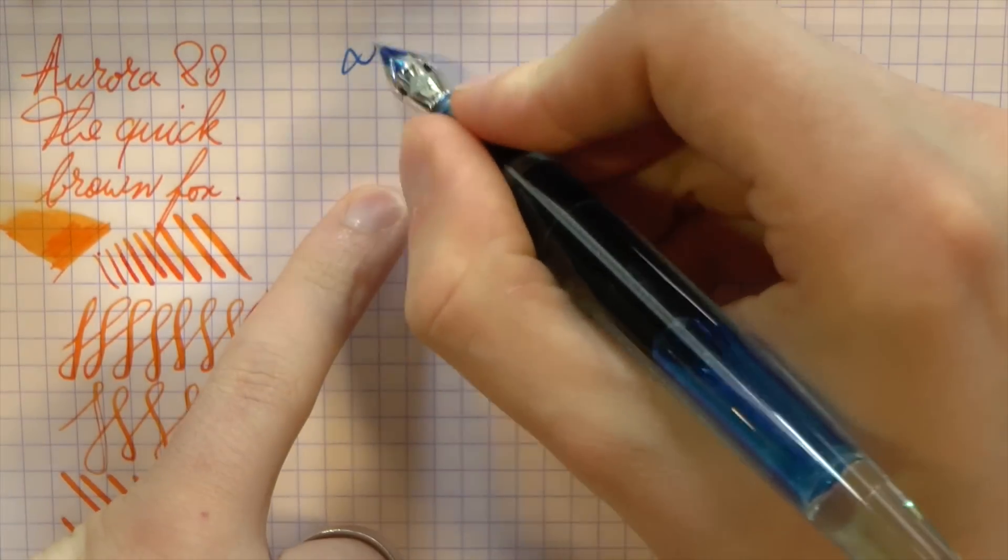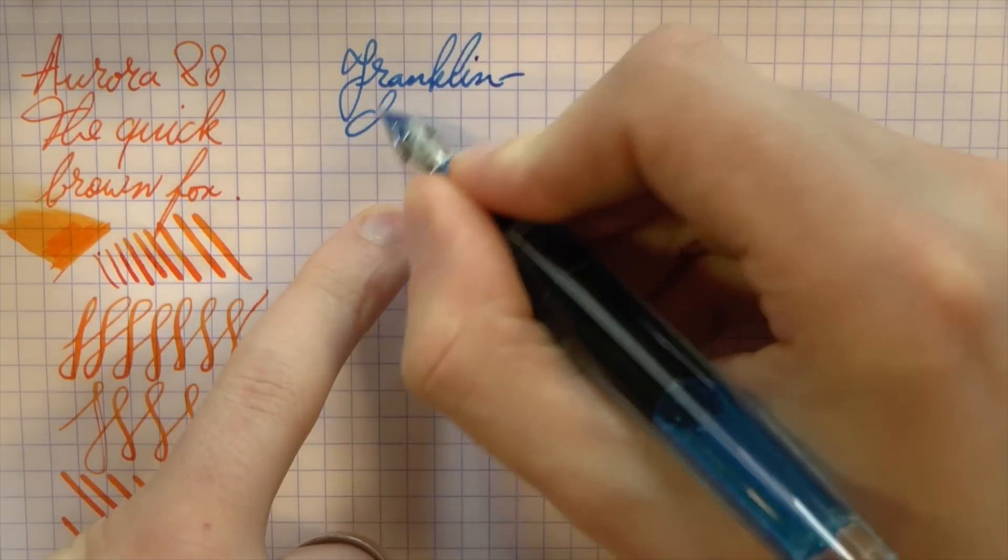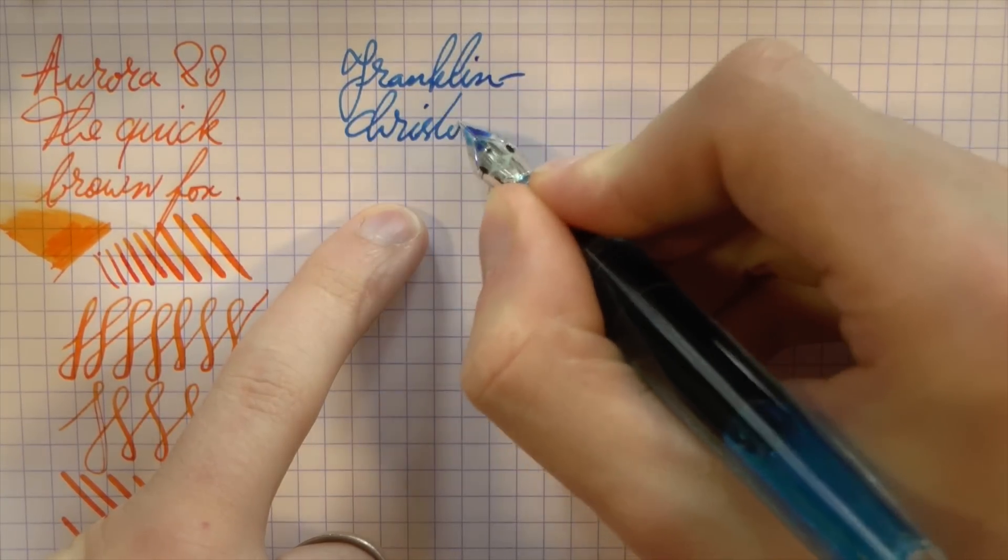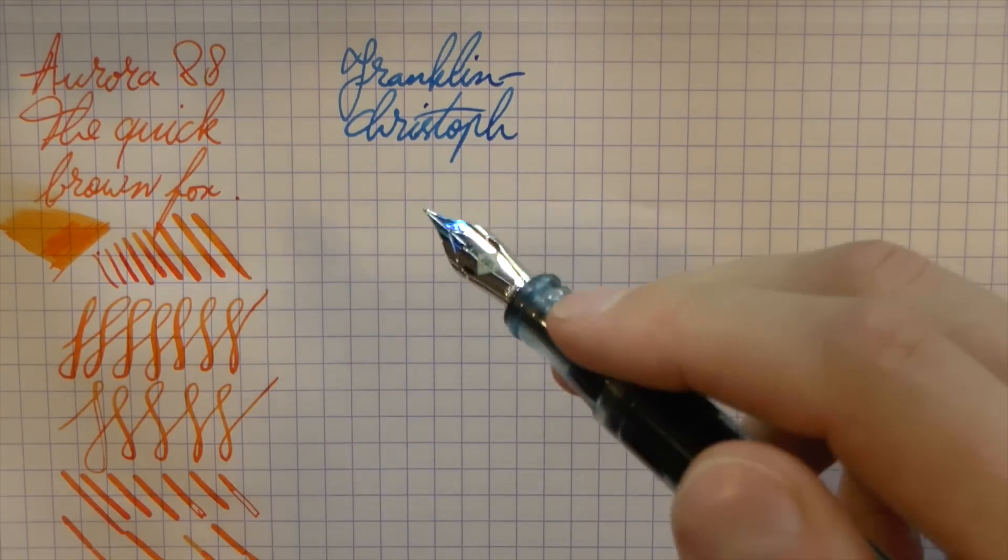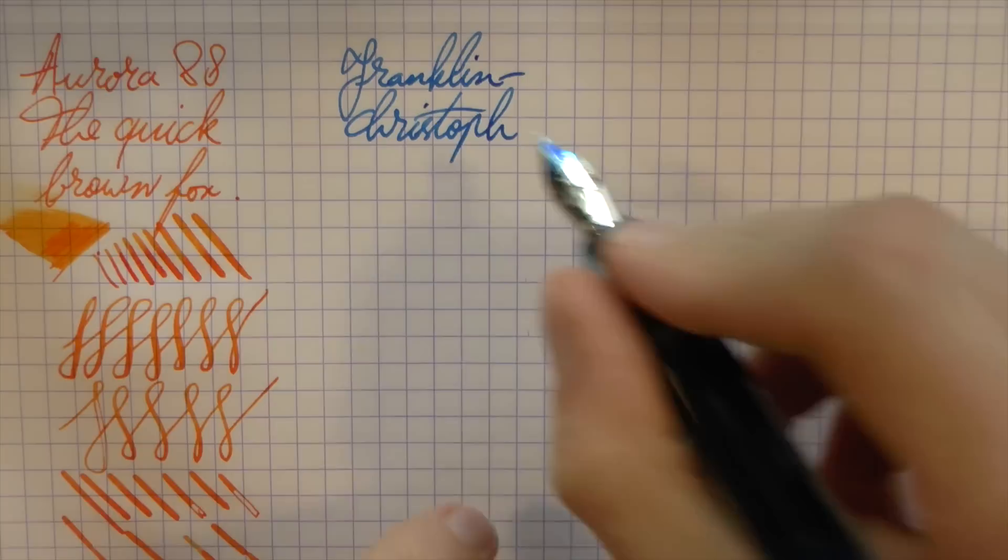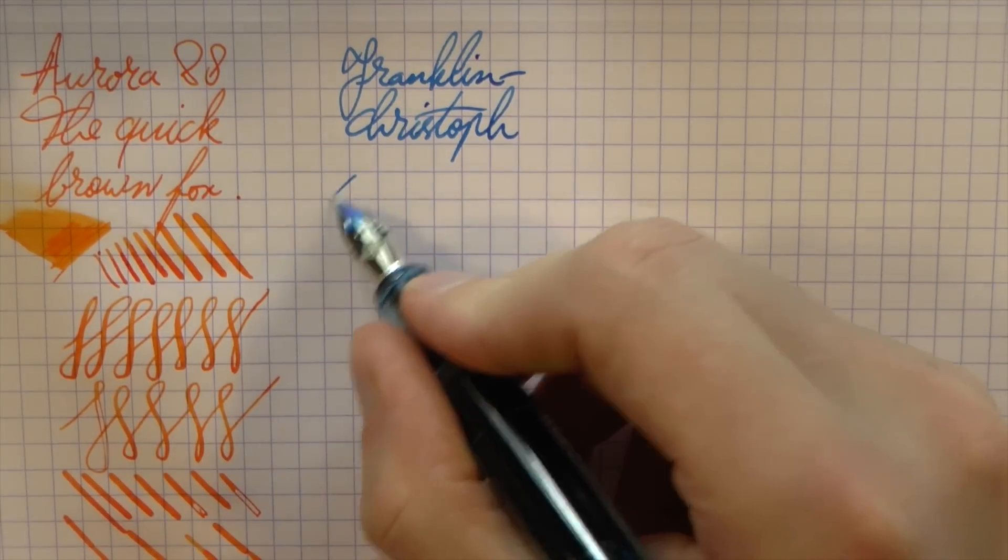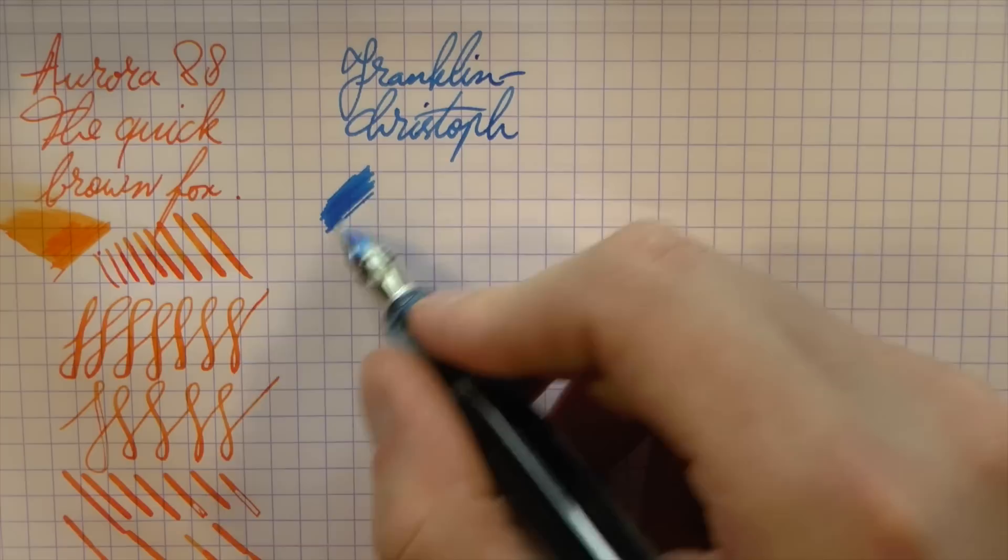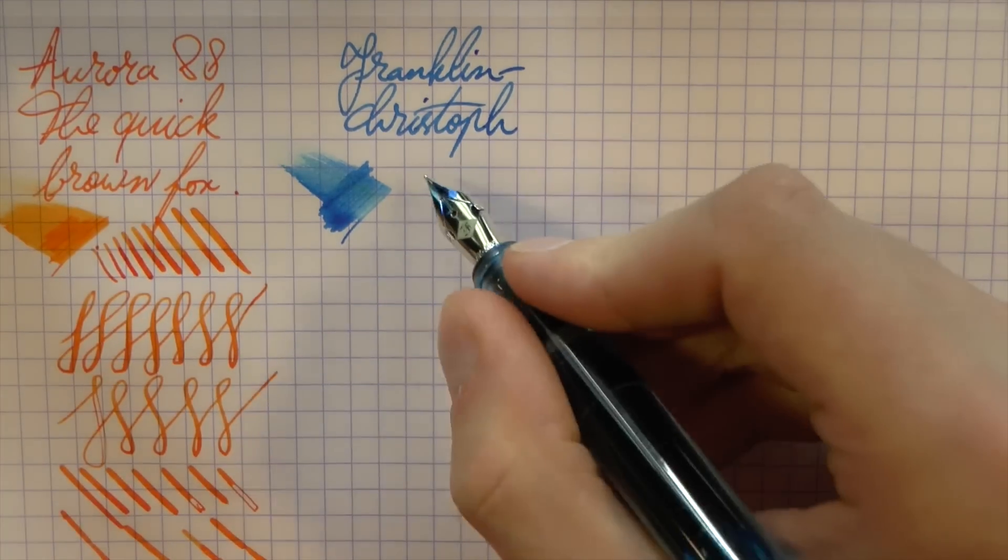Then we have the Franklin Christoph. This is... So this happens to be a model 66, but you can get this nib on more pens. You can also buy it separately from Franklin Christoph. And the ink is Iroshizuku Ama-iro.